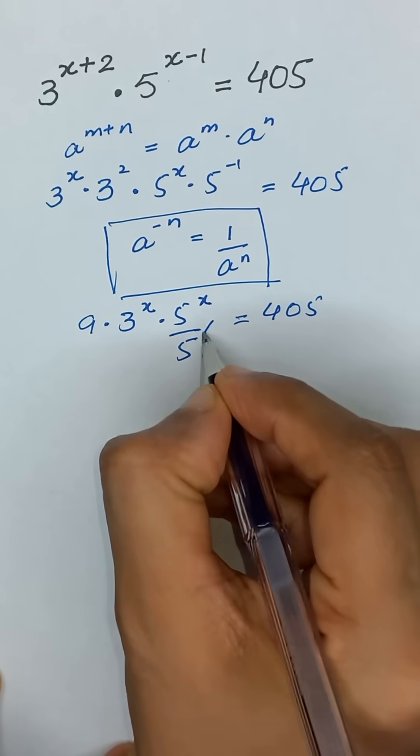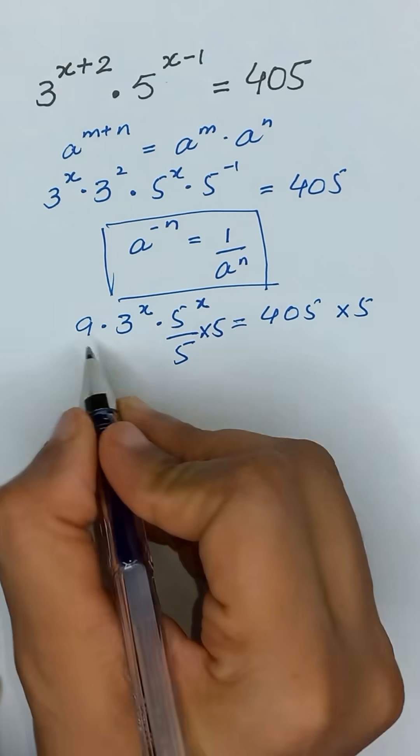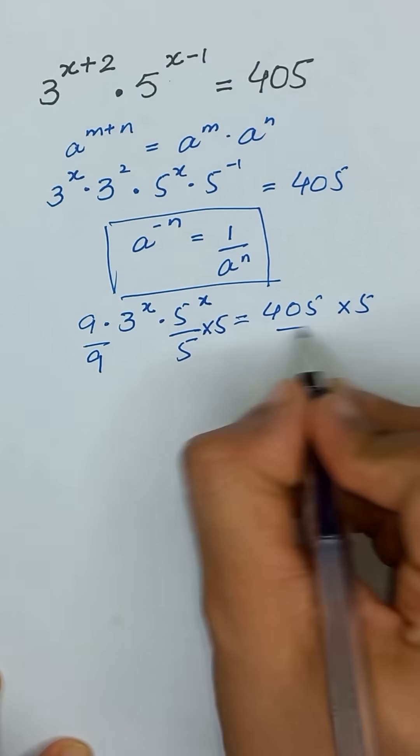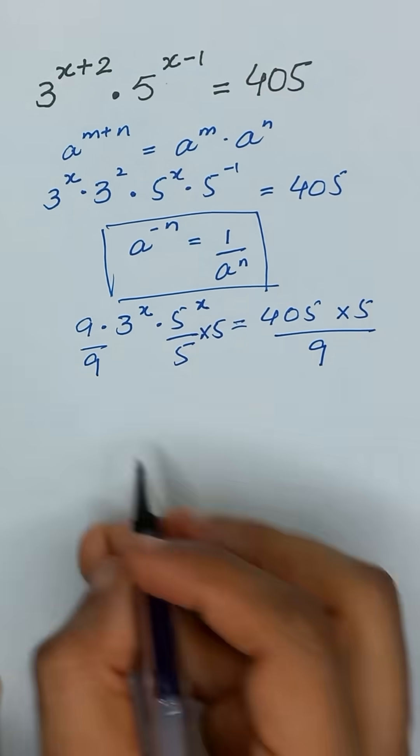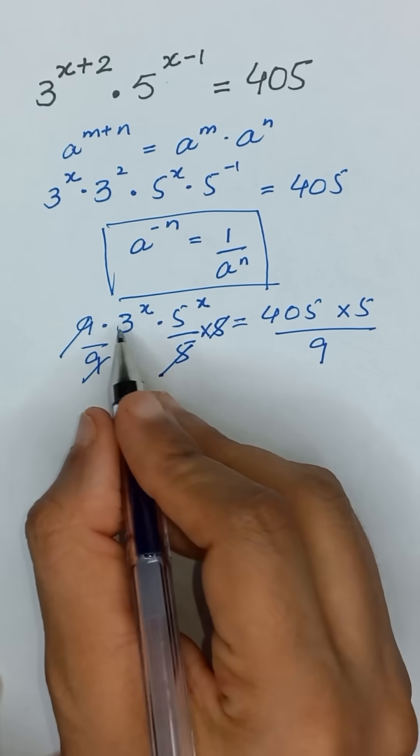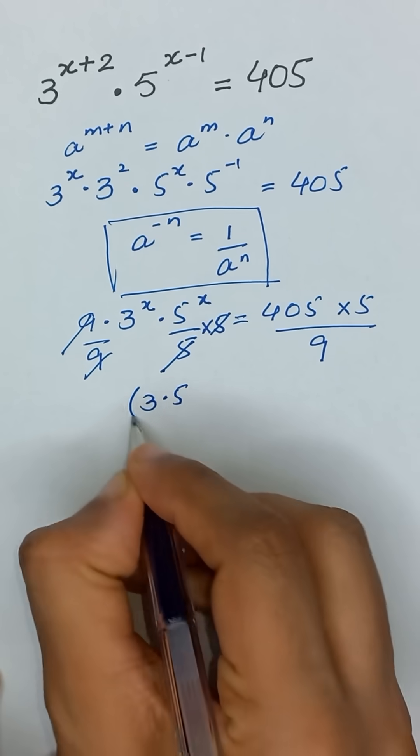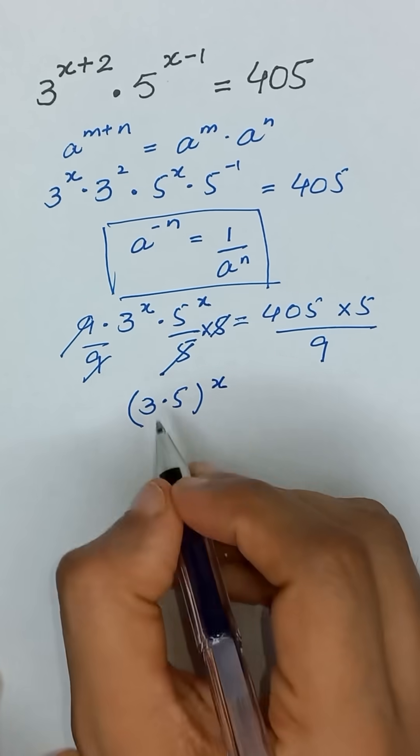Now we multiply both sides by 5 and divide both sides by 9. The 9s and 5s cancel out, and it can be written as 3 times 5 to the whole power x using the exponential rule.